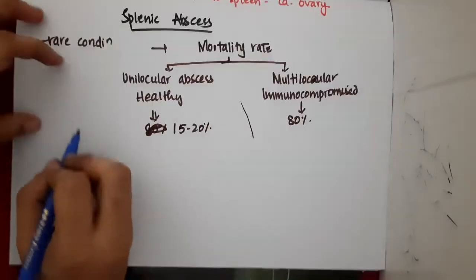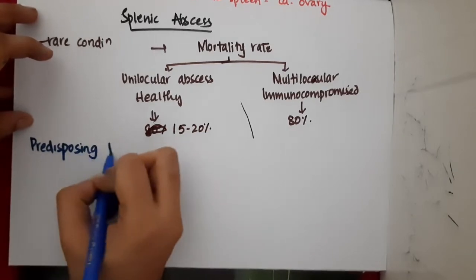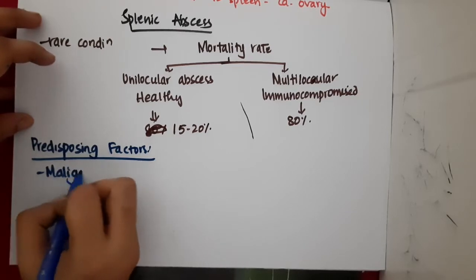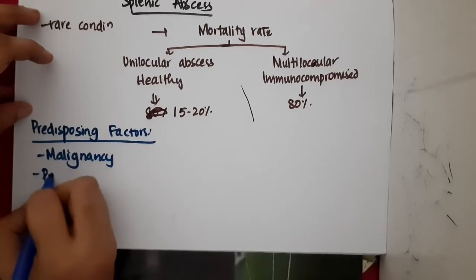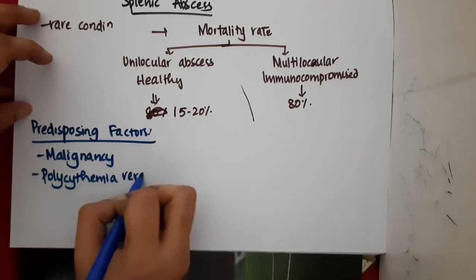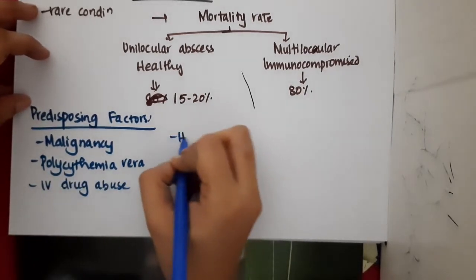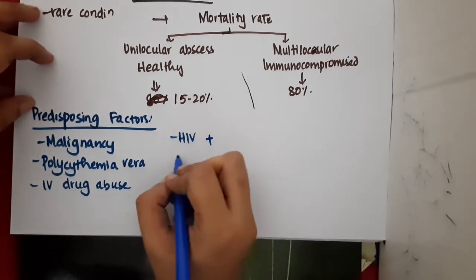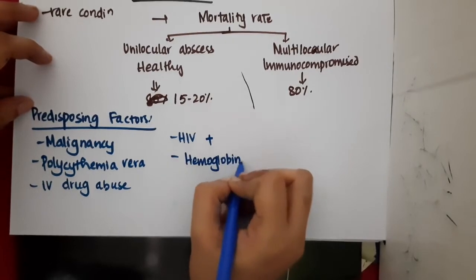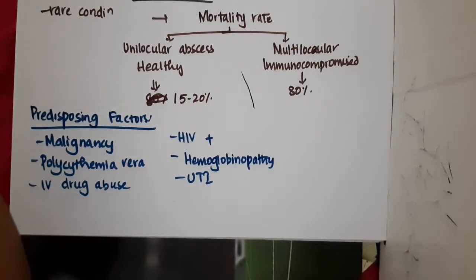The predisposing factors include malignancy, polycythemia vera, IV drug abuse, HIV positive individuals, hemoglobinopathy, and urinary tract infection. These are all the predisposing factors.